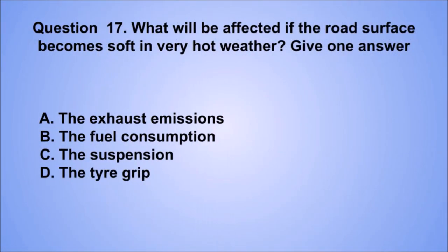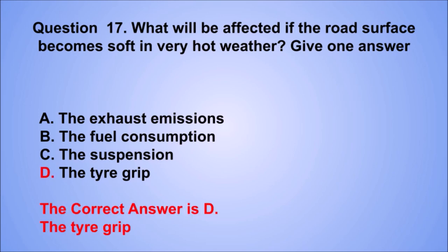Question 17. What will be affected if the road surface becomes soft in very hot weather? Give one answer. A: The exhaust emissions. B: The fuel consumption. C: The suspension. D: The tyre grip. The correct answer is D: The tyre grip.